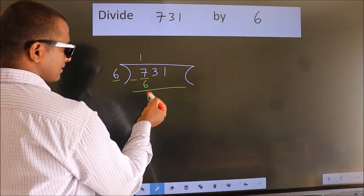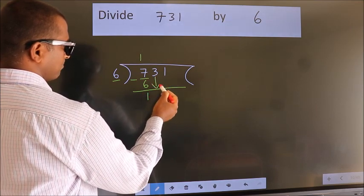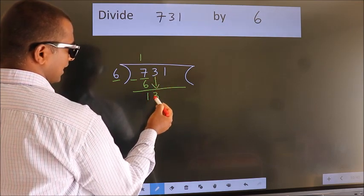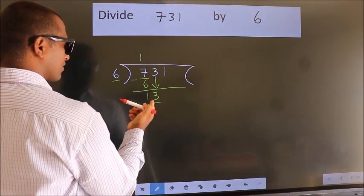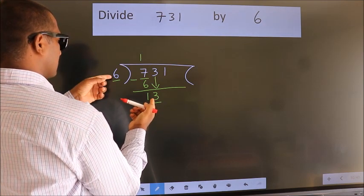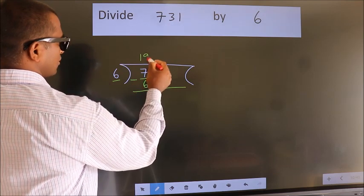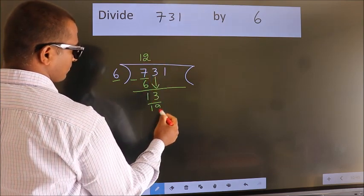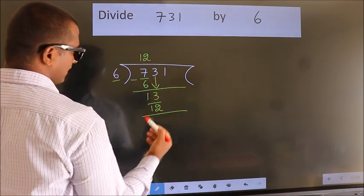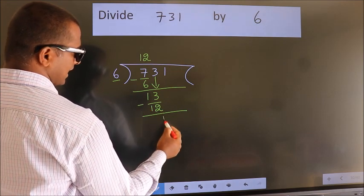After this, bring down the beside number. So 3 down. So 13. A number close to 13 in 6 table is 6 2s 12. Now we subtract. We get 1.